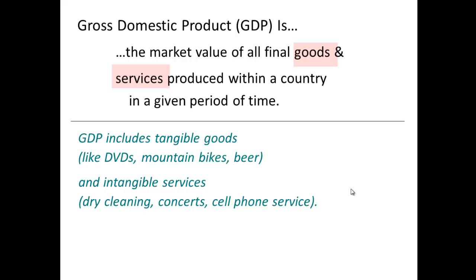The same is true for individuals who hire immigrants to come and work in their home, either as childcare providers or as housekeepers, and if they pay them off the books — that would not get counted in GDP. Think of it this way: if you can tax it, it gets counted. If you can't necessarily tax it, it might not get counted.